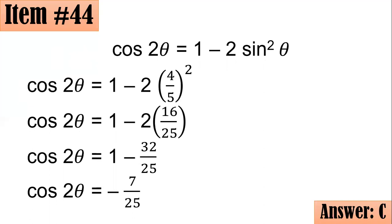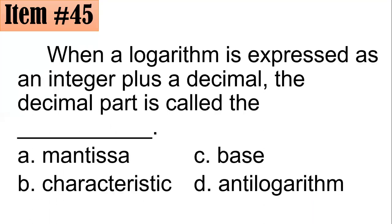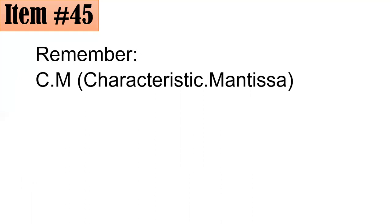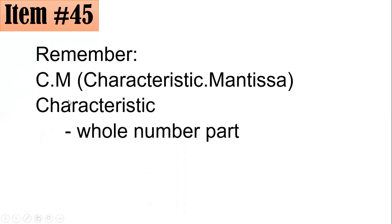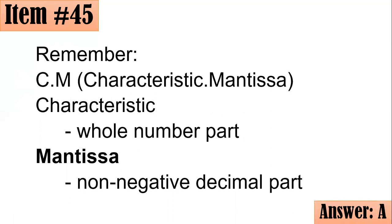Item 46: When a logarithm is expressed as an integer plus a decimal, the decimal part is called the mantissa, characteristic, base, or anti-logarithm. Remember it as CM — the C is the characteristic (the whole number part) and M is the mantissa (the non-negative decimal part). Letter A.